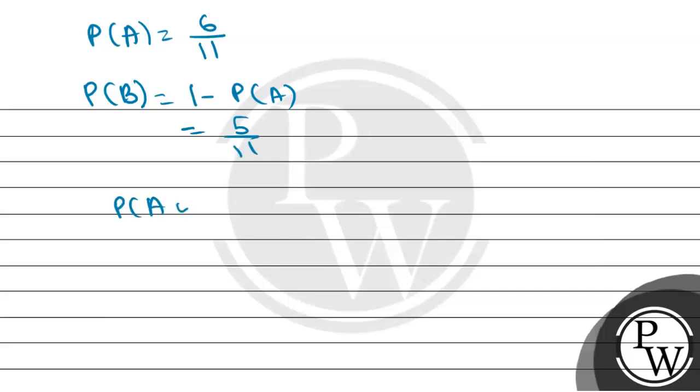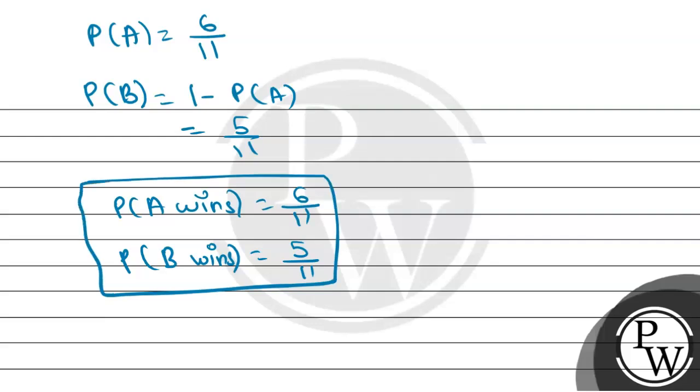So probability of A wins is 6/11 and probability of B wins is 5/11. I hope the concept is clear, thank you.